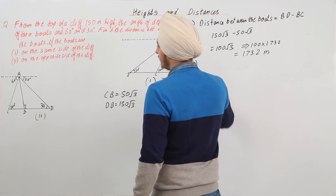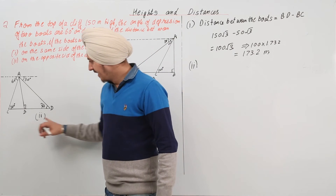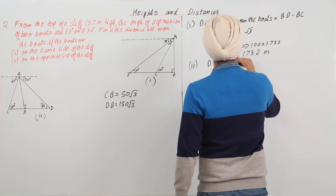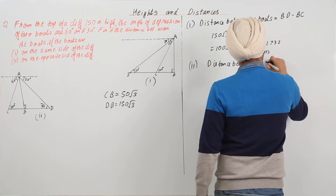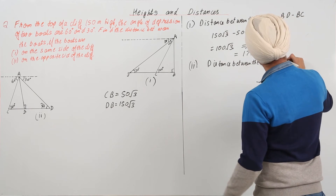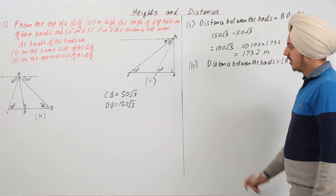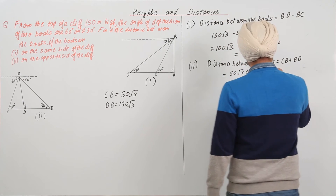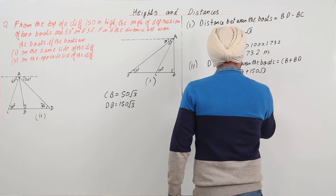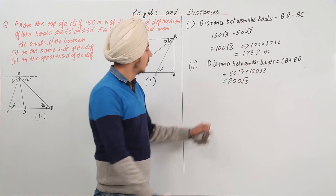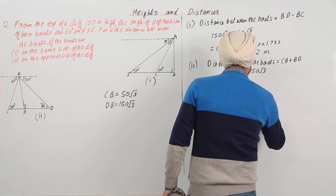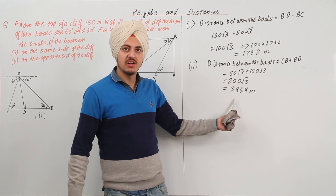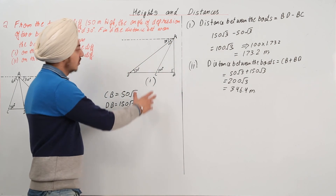In the second part, when the boats are on opposite sides, the distance between the boats CD equals CB plus BD. So the distance equals 50 root 3 plus 150 root 3, which equals 200 root 3, and this value equals 346.4 meters. So when boats are on opposite sides the distance is 346.4 meters, and when on the same side it is 173.2 meters.